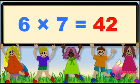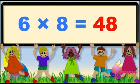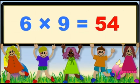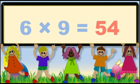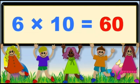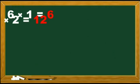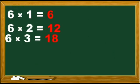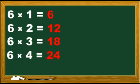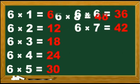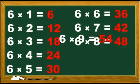6 8s are 48. 6 9s are 54. 6 10s are 60. Let's do it one more time. 6 1s are 6. 6 2s are 12. 6 3s are 18. 6 4s are 24. 6 5s are 30. 6 6s are 36. 6 7s are 42. 6 8s are 48. 6 9s are 54.